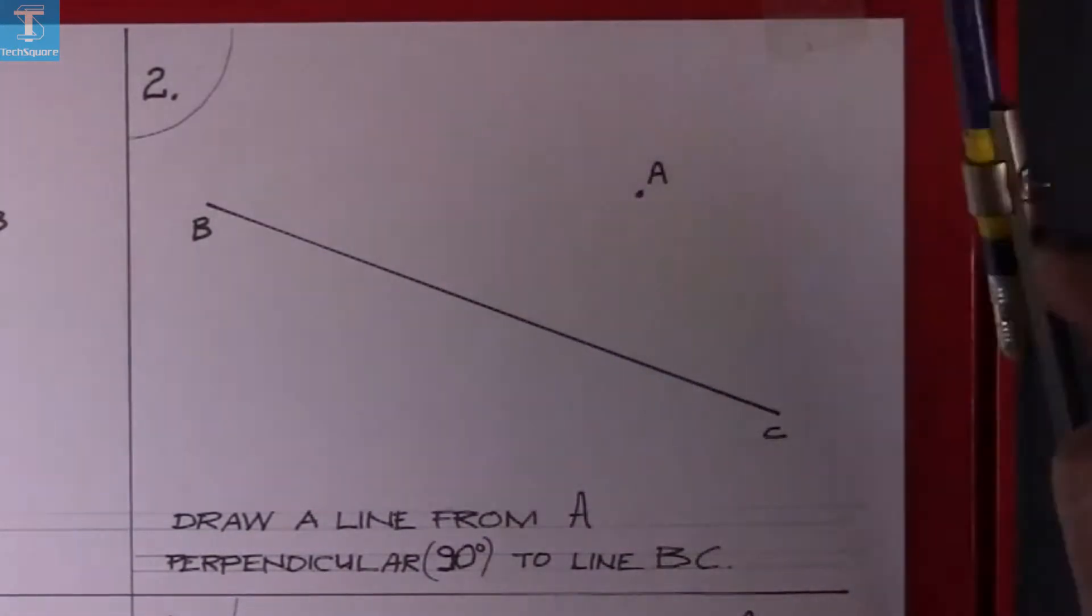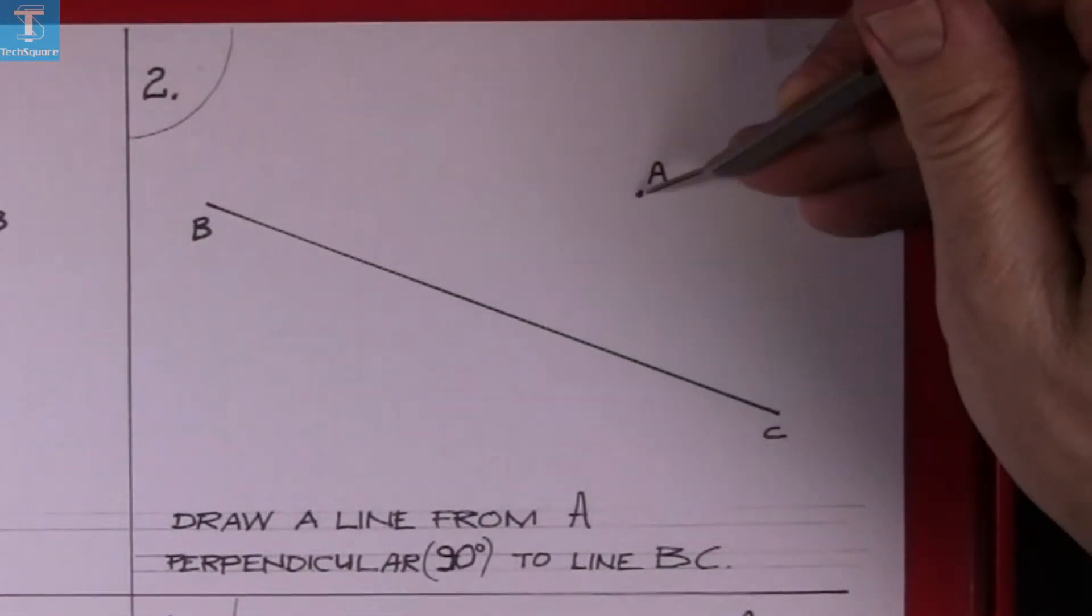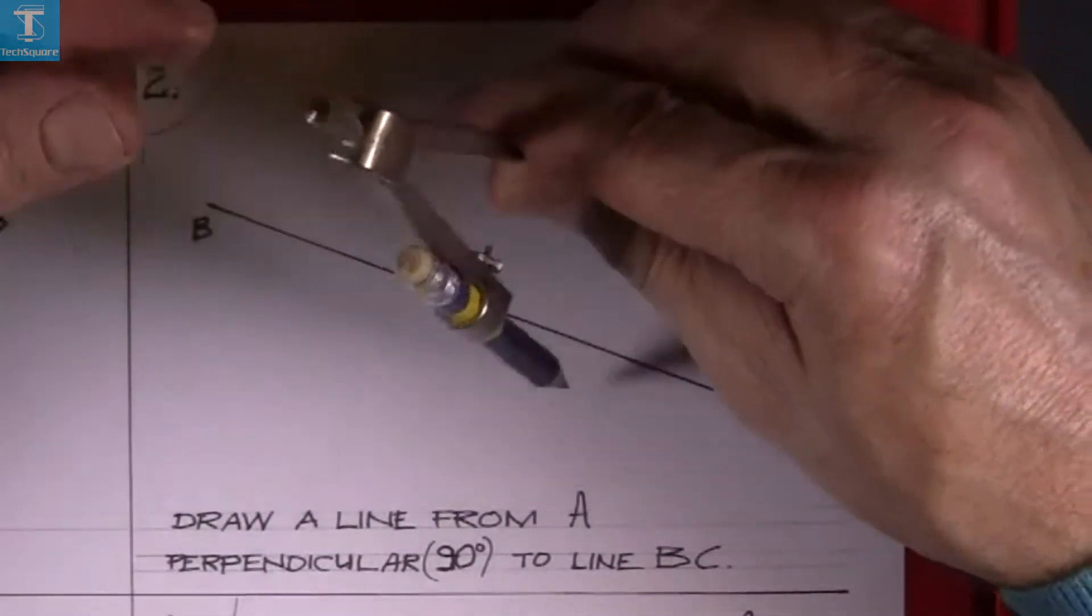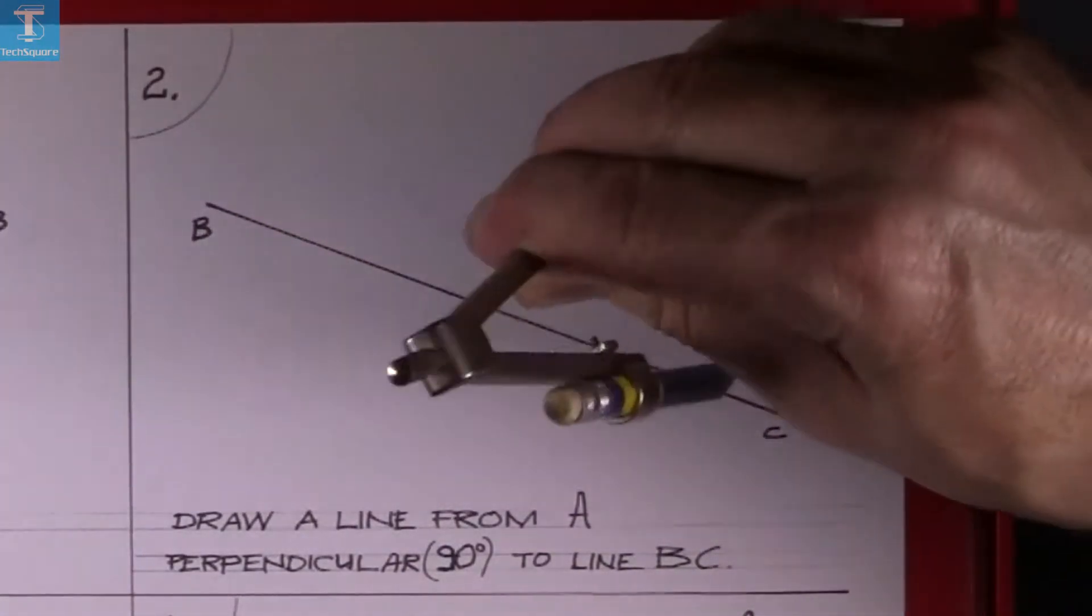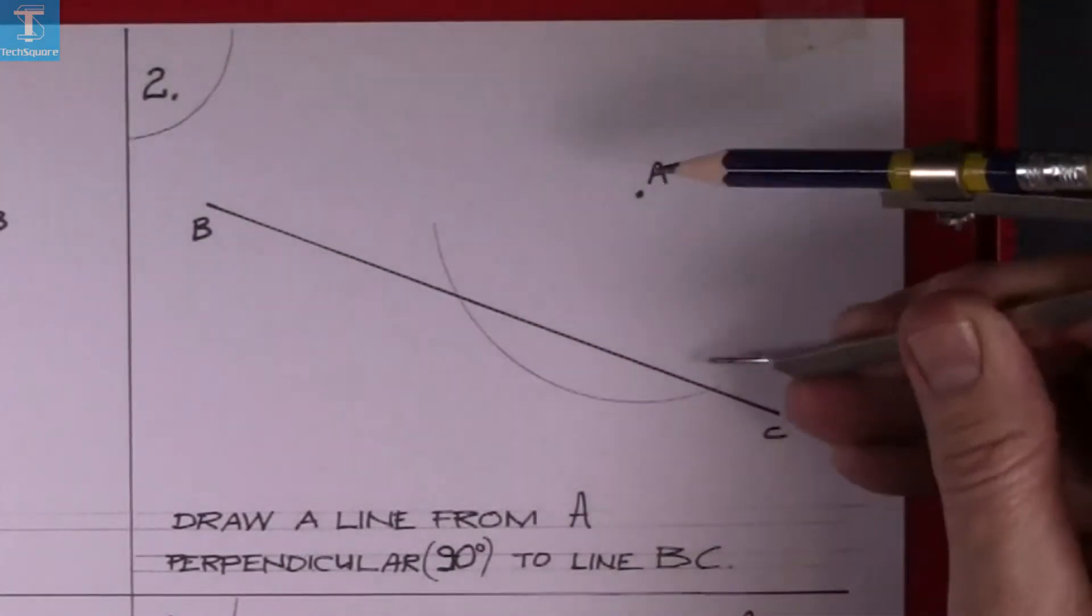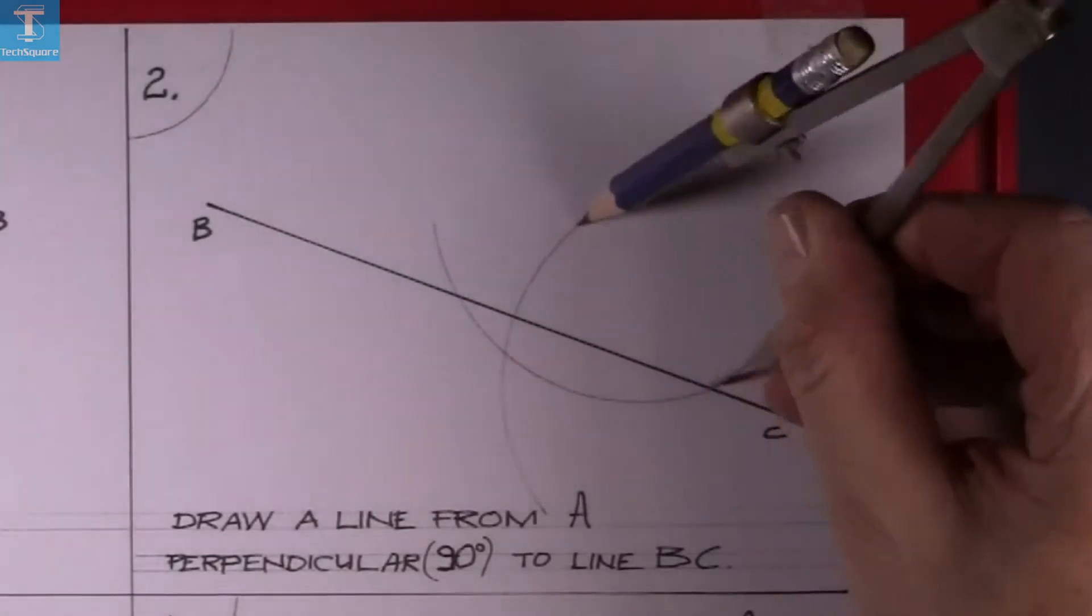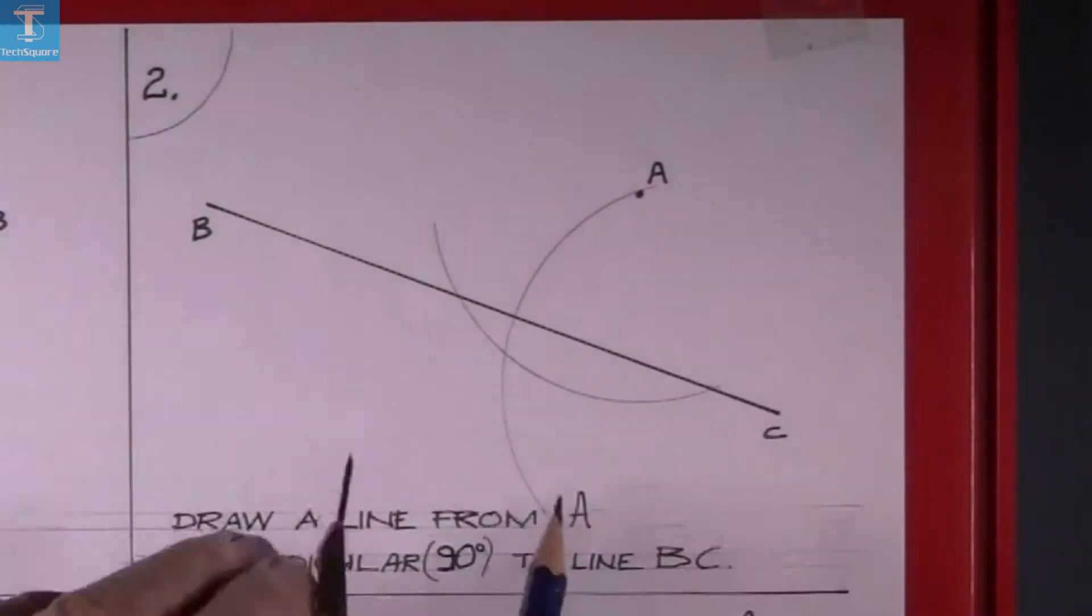To do that, we must show construction. So again, we set the compass or use the compass. Set the compass past the line and draw an arc to cut the line in two places. Put the point of compass in the end of the arc there and draw an arc, and the same again on this side.